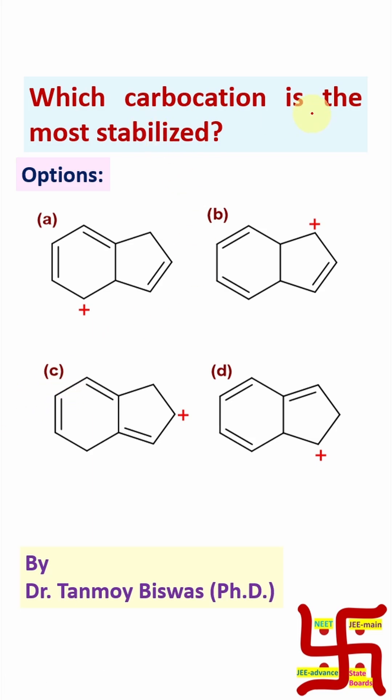Now the question: which of the carbocation is most stabilized? If you look at this there are carbocations. By the way remember carbocations are electron deficient species. So any electron donating group acting through +I effect, +R effect or hyperconjugation will result in stabilization.